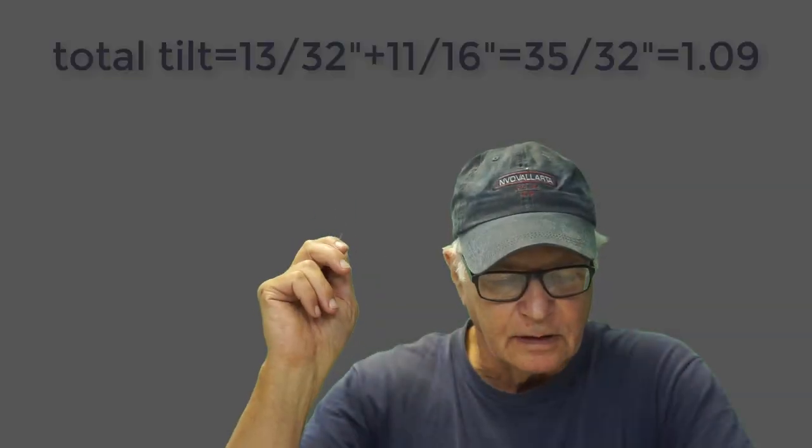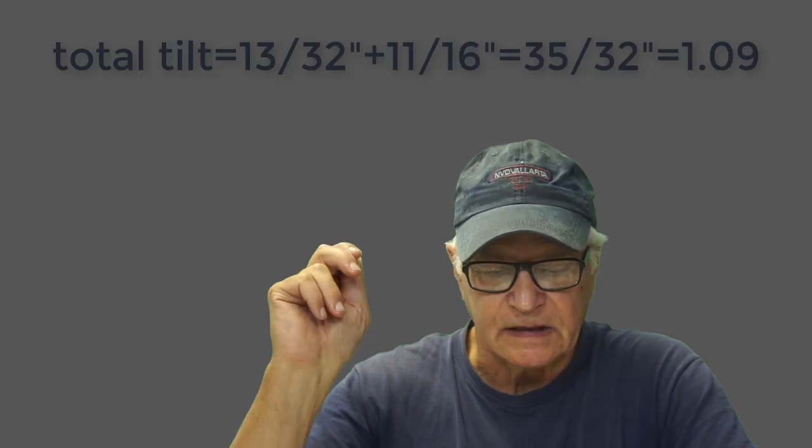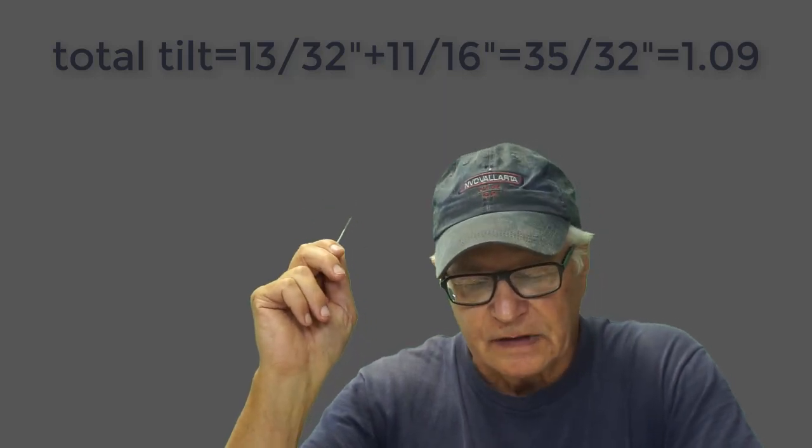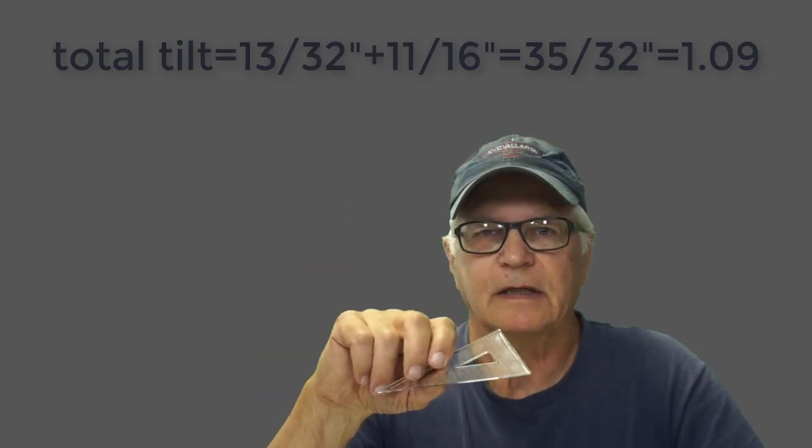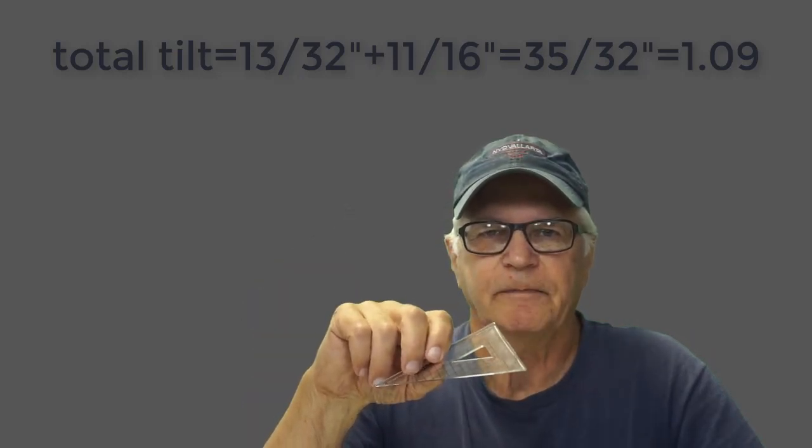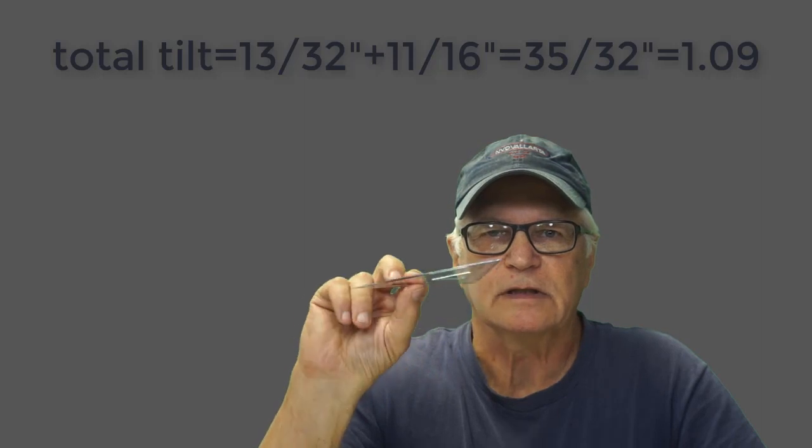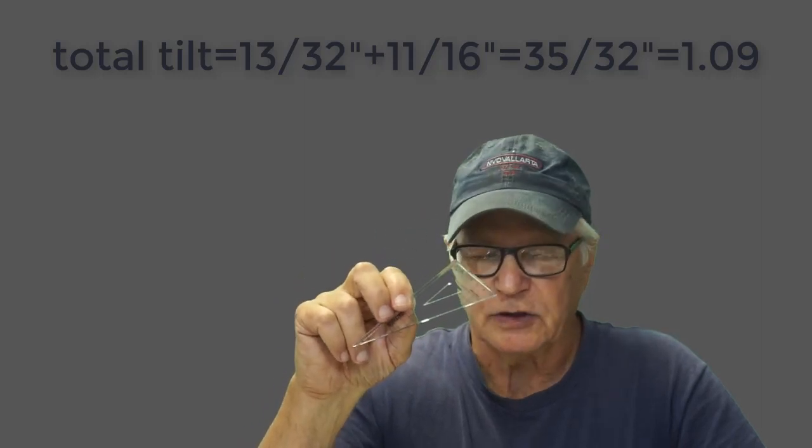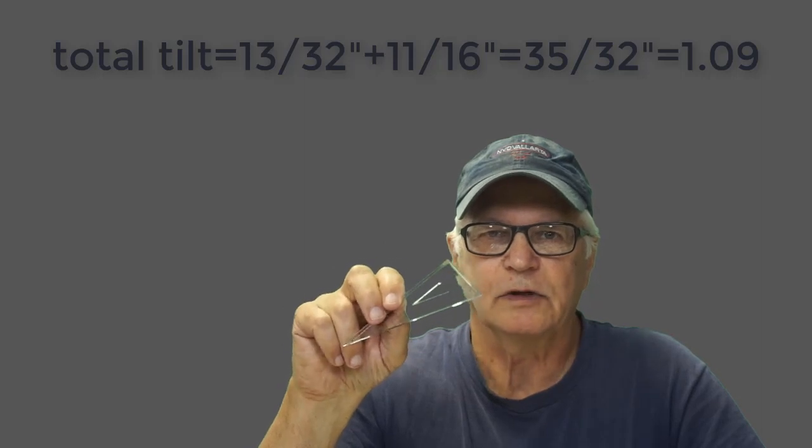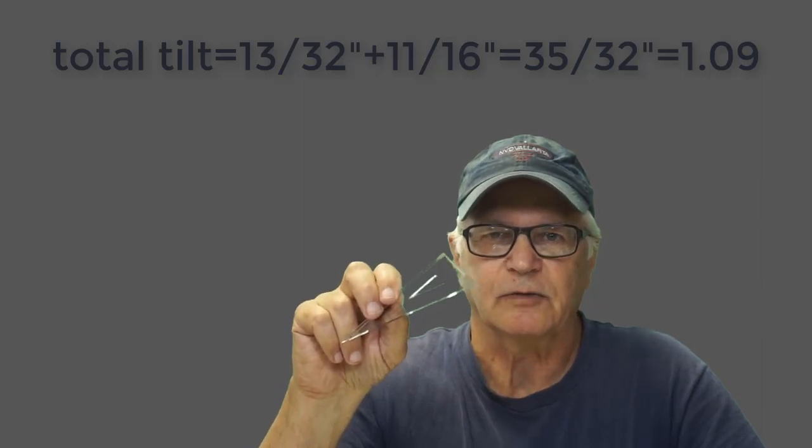Here's our final numbers: 13/32nds plus 11/16ths equals 35/32nds, which equals 1.09. A good determination as to whether a method is valid or not is repeatability. I can reposition the wheels at 30 degrees with a small plastic triangle and retake those measurements, and the total will always be within plus or minus 1/32nd.